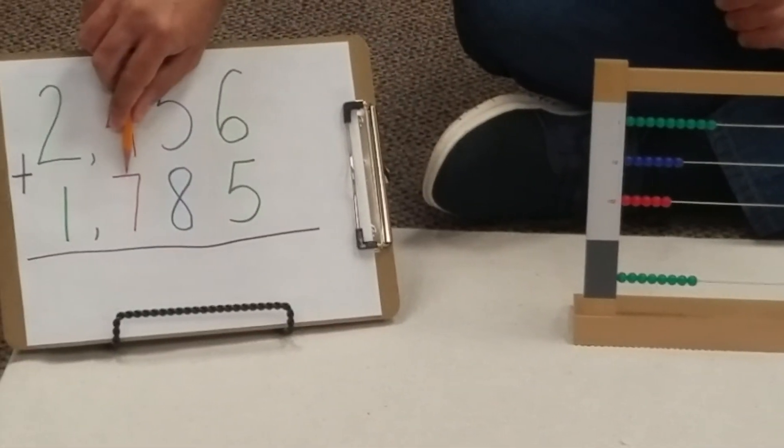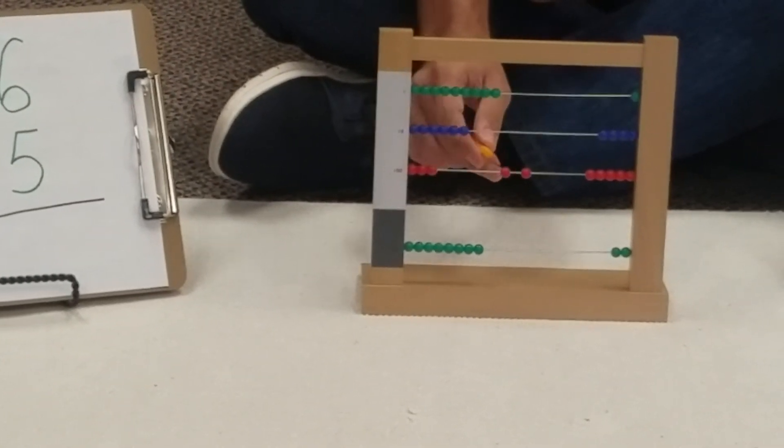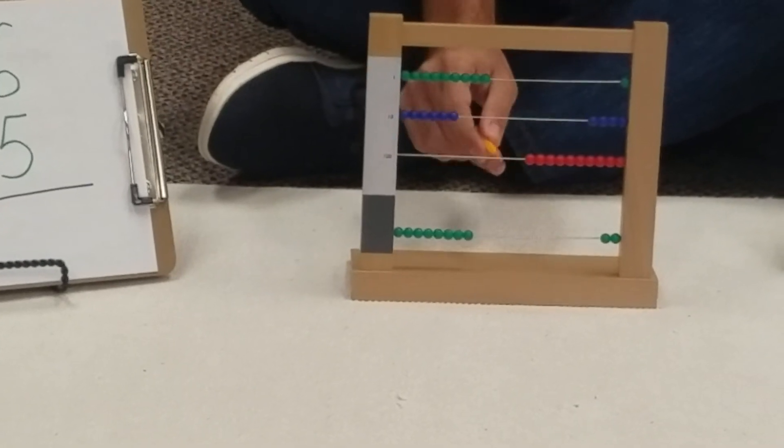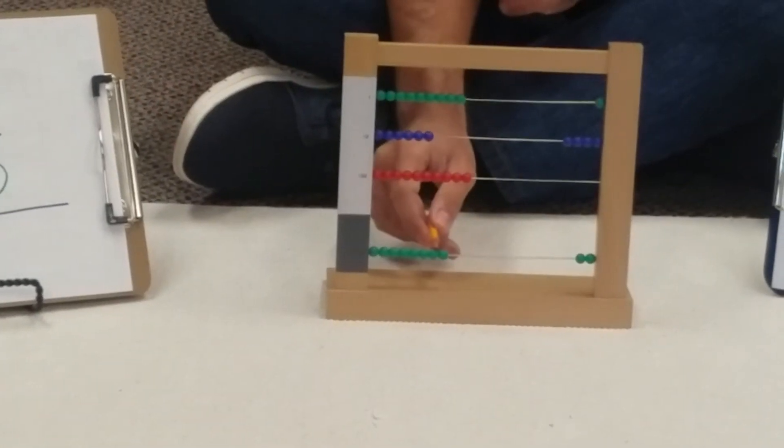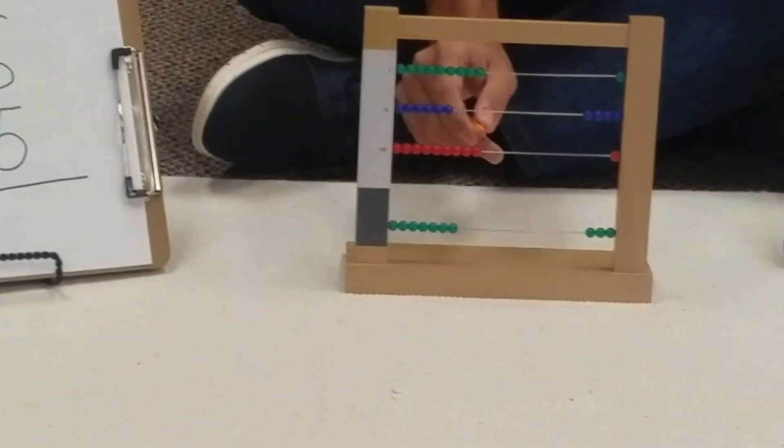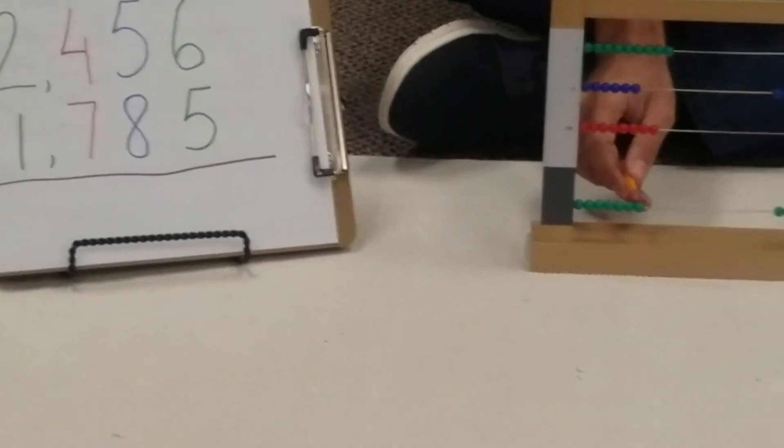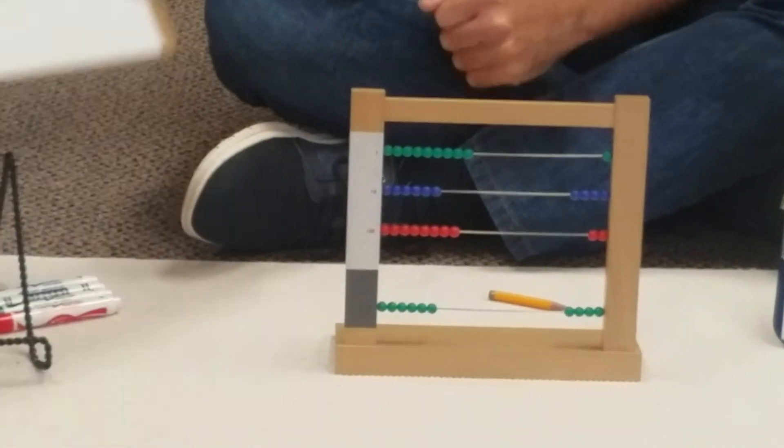Finally we need to add 7 hundreds. We add one, two, three, four, five hundreds. Again we exchange the ten hundreds for one thousand. And now it's six, seven hundreds. And finally we add one thousand. So the answer to our problem, we can write it down.